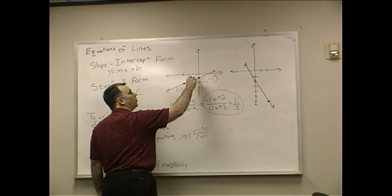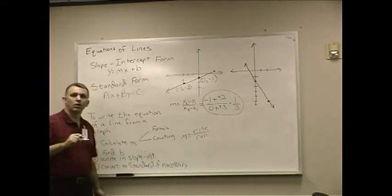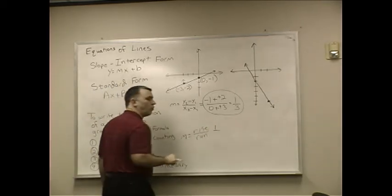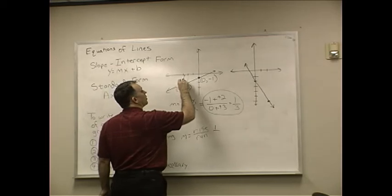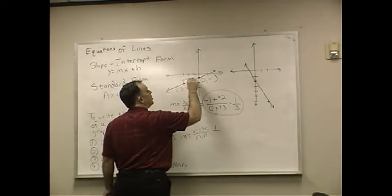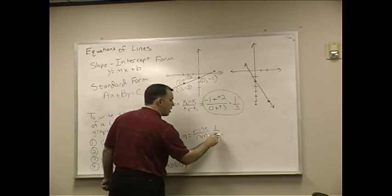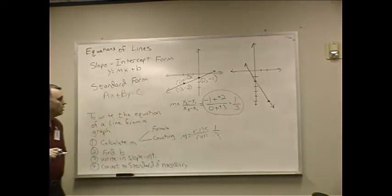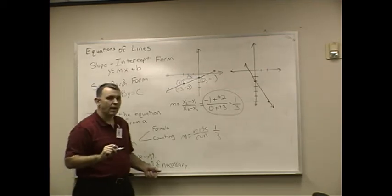So, going from this point to this point, how much rise occurred? Well, you had a rise of 1, didn't you? How much run occurred? Well, we went over 1, 2, 3. So, I had a rise of 1 and a run of 3. So, the slope there is 1 third. Either way you'd like to do it. It works fine.